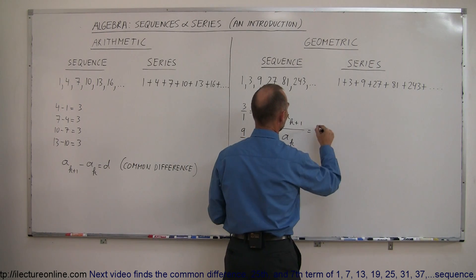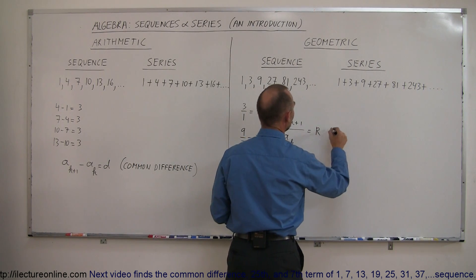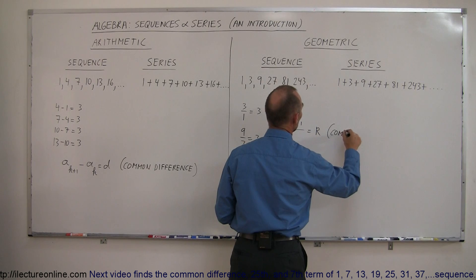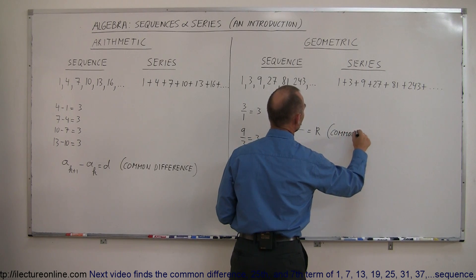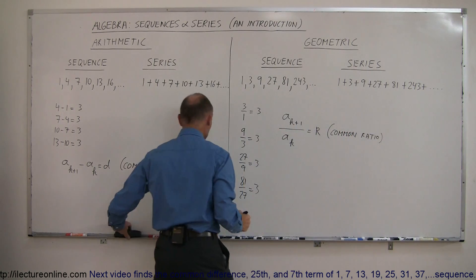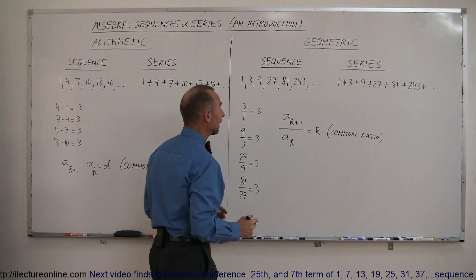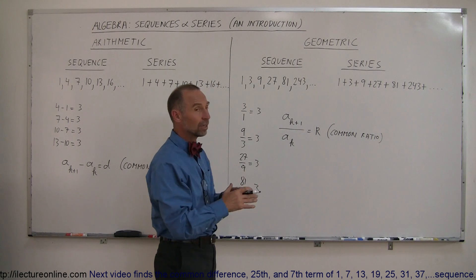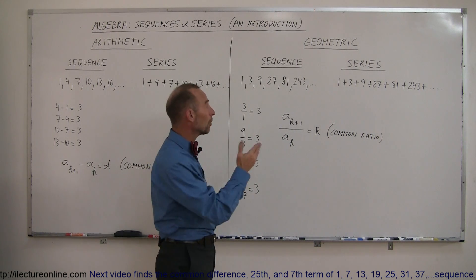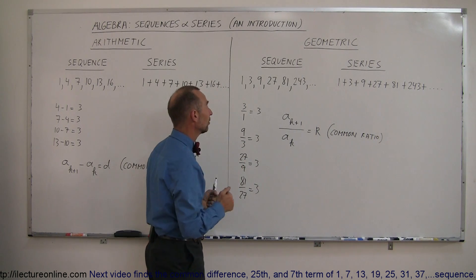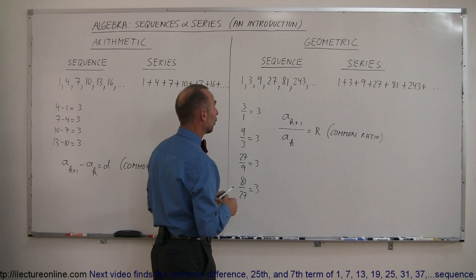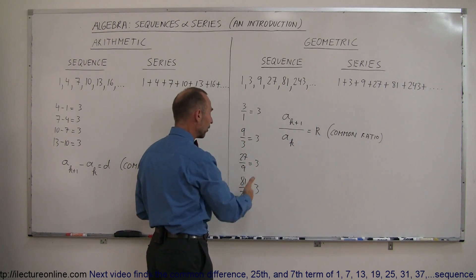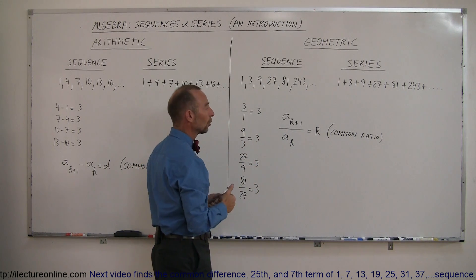That ratio r is known as the common ratio. So if you have a geometric sequence or series, taking any number and dividing it by the previous number always gives you the very same value, which is the common ratio between the numbers.